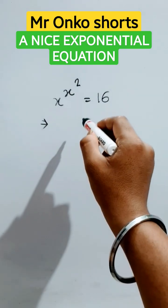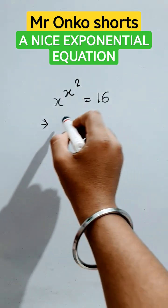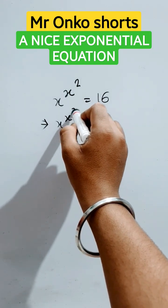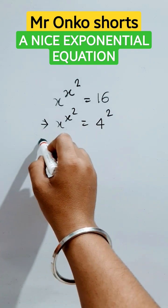Let's start. It is x raised to the power x squared equals 16, which can be written as 4 squared.